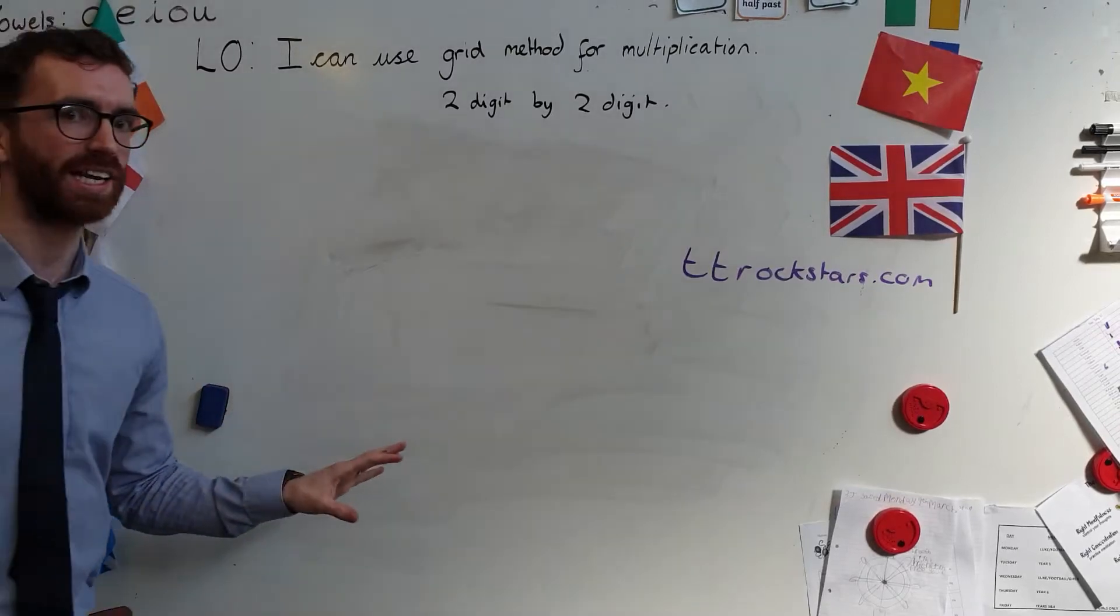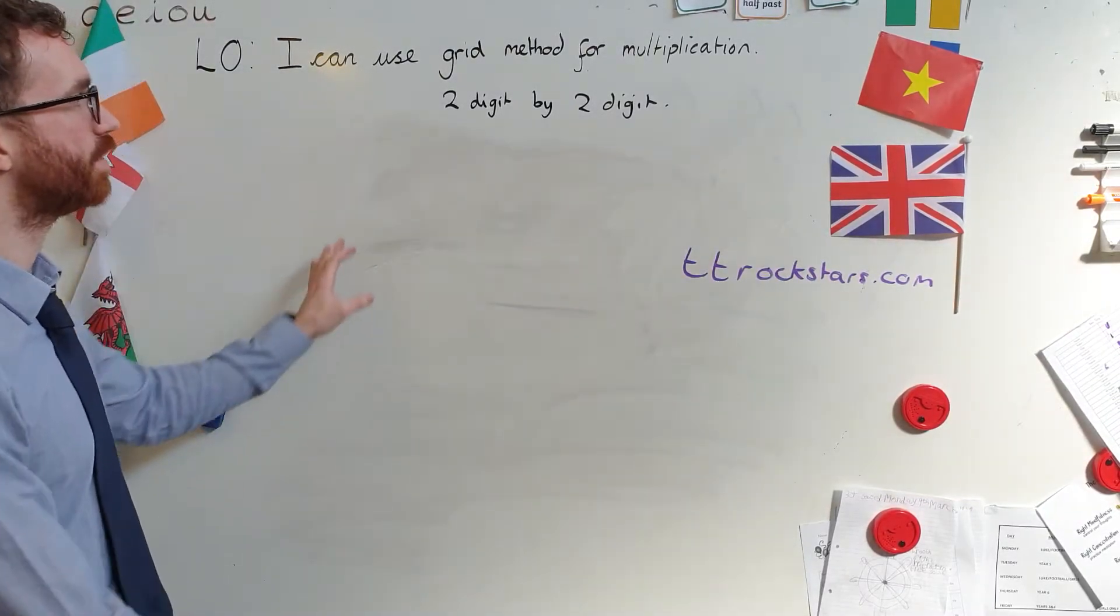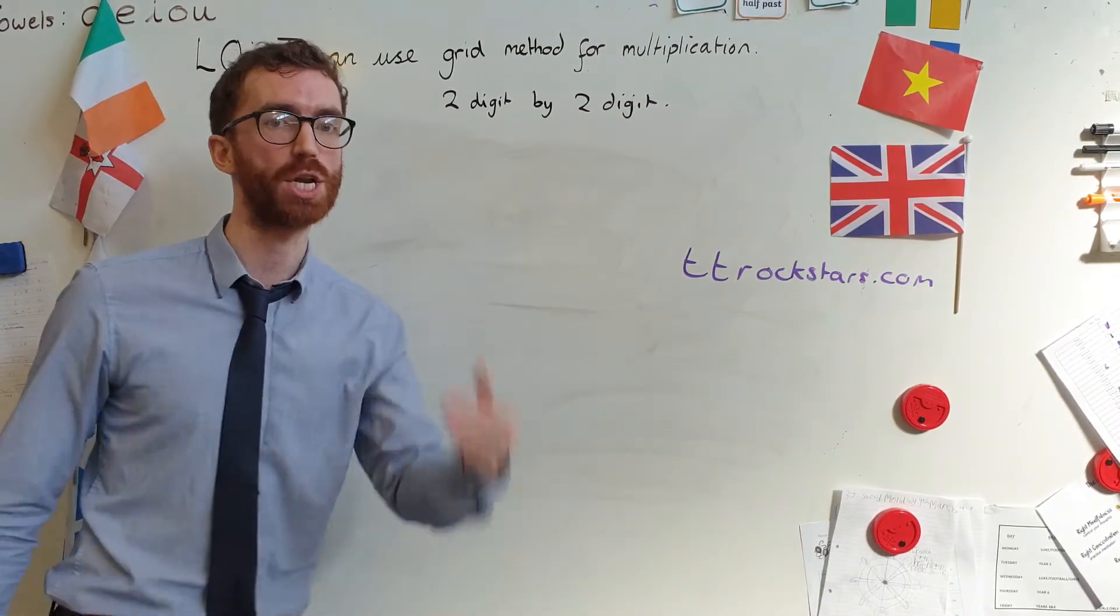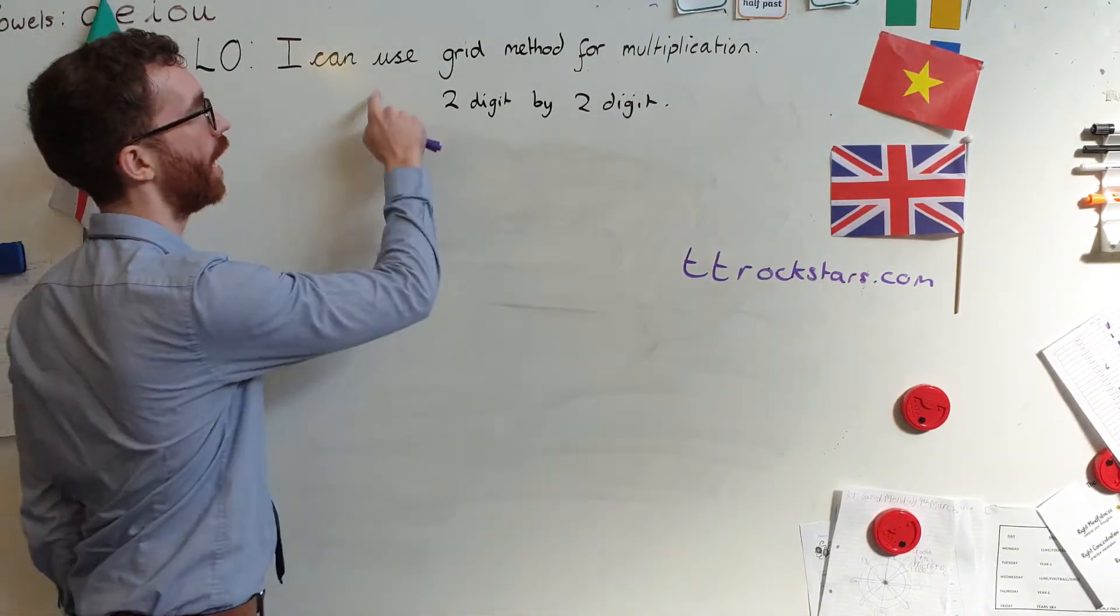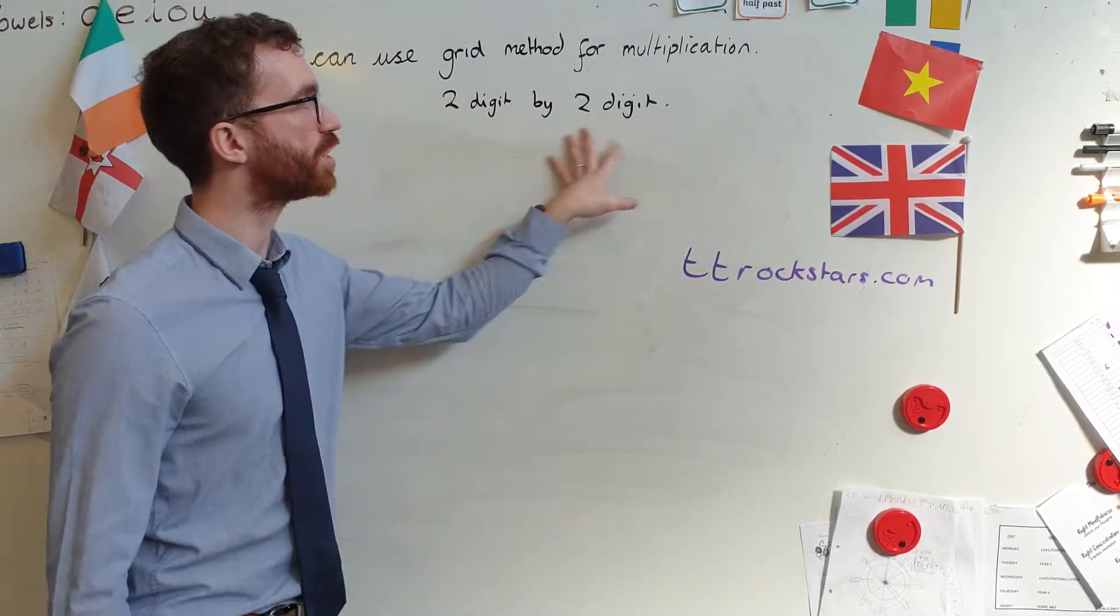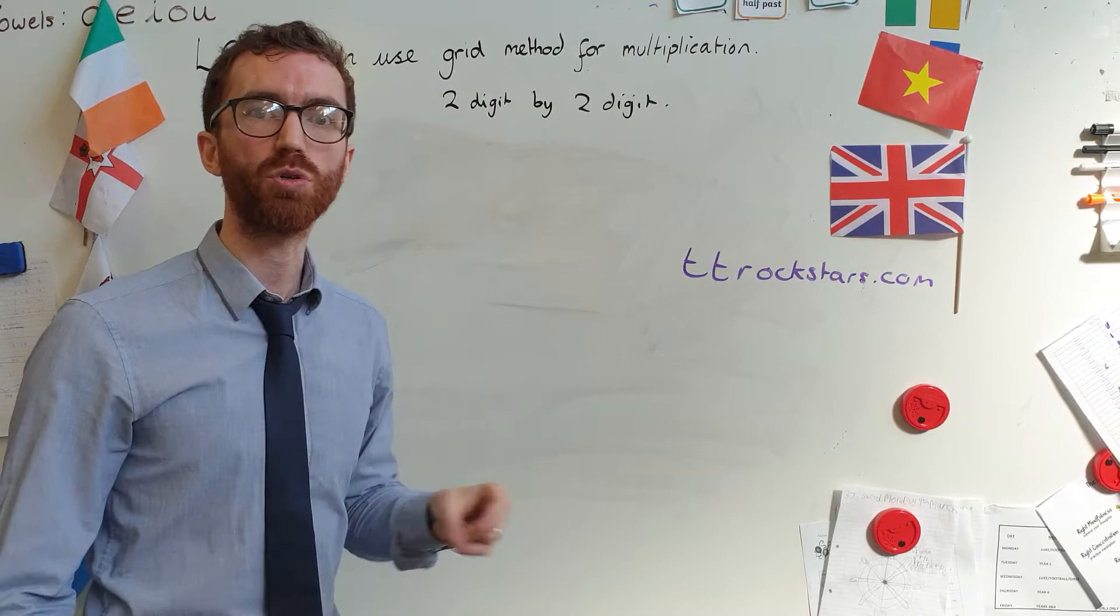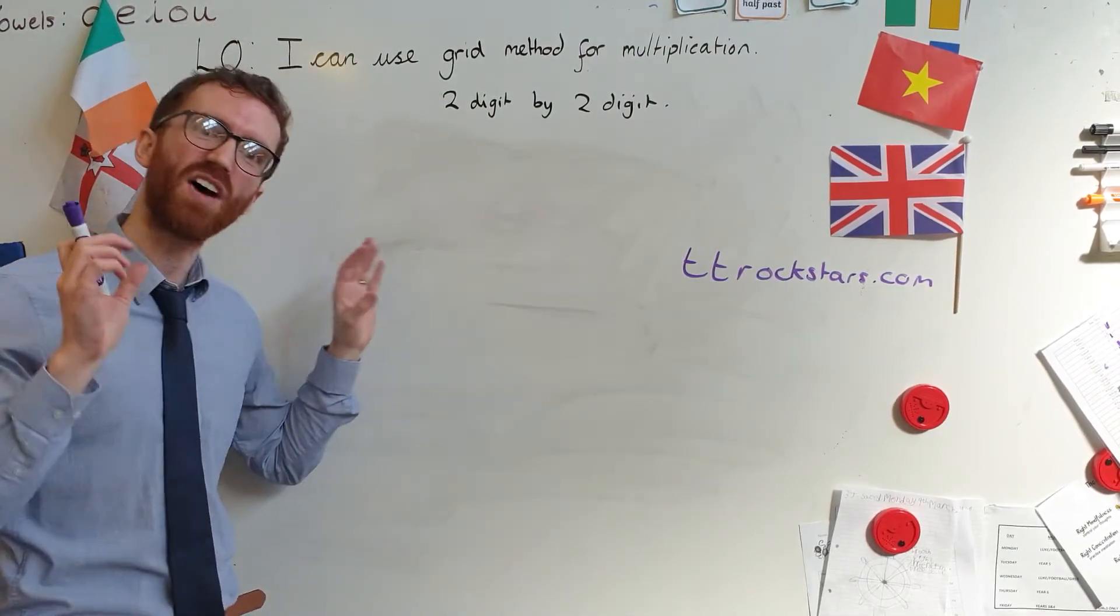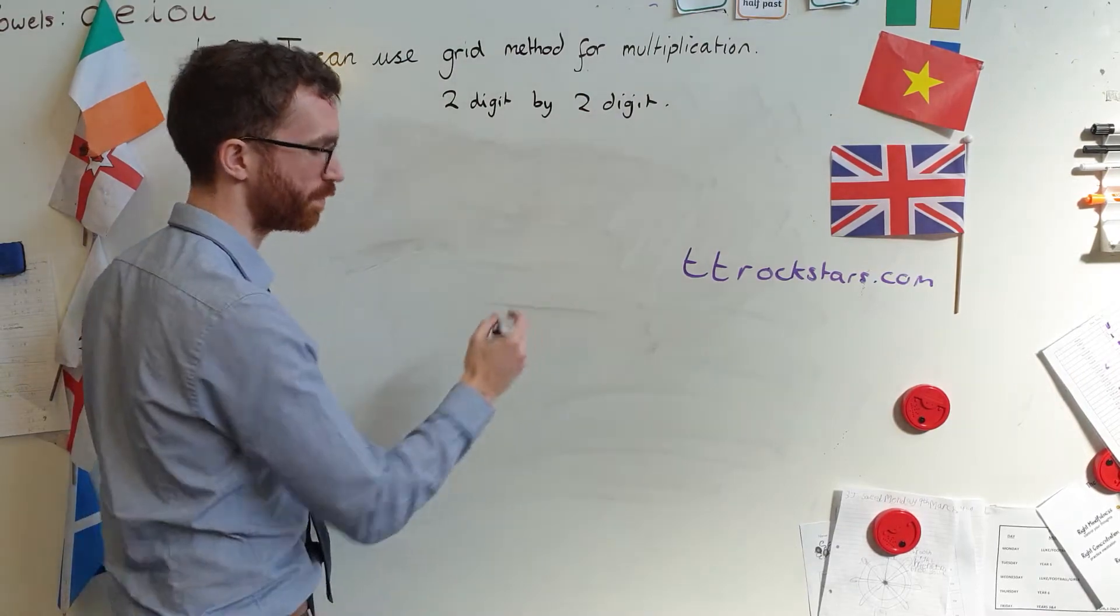Okay, we've got a real quick lesson this time, and it is following on from another lesson we did where we looked at multiplication on a number line. Now this time we're looking at using the grid method instead of the number line, because we're doing two digit by two digit. And actually, even if you're doing three digit by two digit, or three digit by three digit, the grid method is a fantastic method for helping you with this.